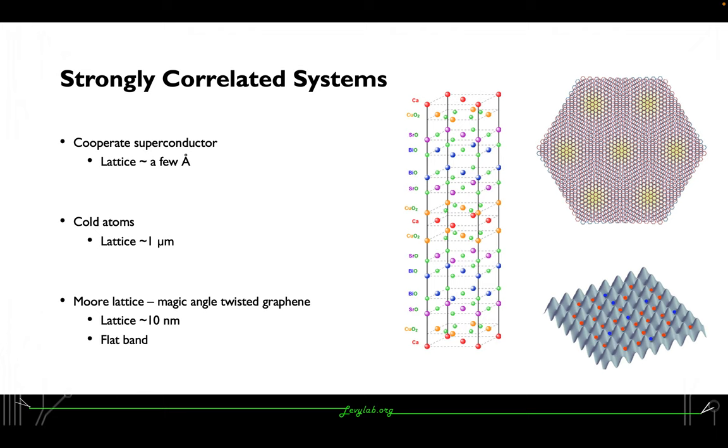More recently, the Moiré lattice at the magic angle twisted graphene shows flat band being generated with spatially localized electrons, and its lattice size is around 10 nanometers. Its superconductivity is tightly related to this flat band situation.